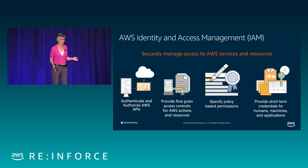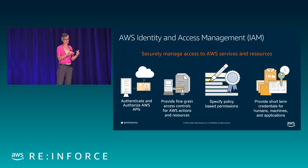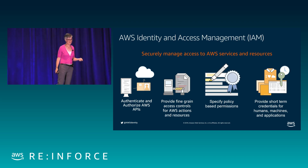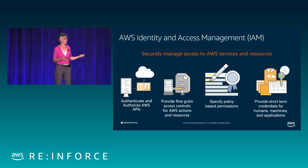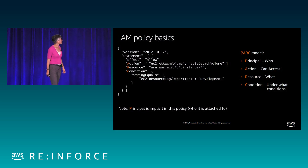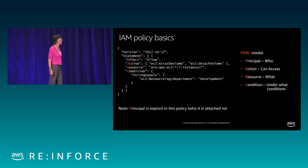Now let's move to the middle layer of the cake — the infrastructure. You're thinking about operating systems and databases: how am I going to authenticate users into those operating systems and connect to those databases, even for service accounts for applications acting on those resources? That brings us to AWS Directory Service.